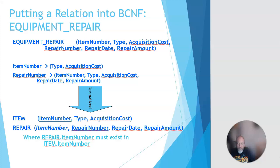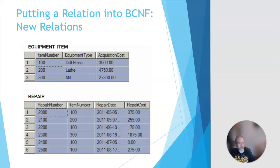So what does this look like when we're done? This makes much more sense. There's your items table, with item number as the primary key for the equipment, holding type and acquisition cost. Then the repair table has the repair number, knows its item number (what was being repaired), the repair date, and repair cost. I think this is a pretty good design. Starting from one table, this looks like a very good result — though in practice you might start with something more complex.